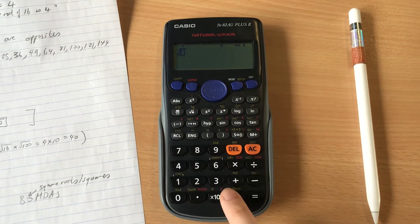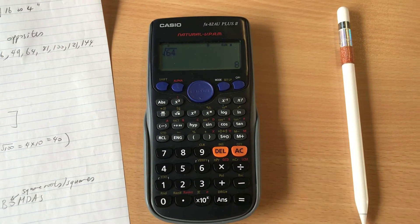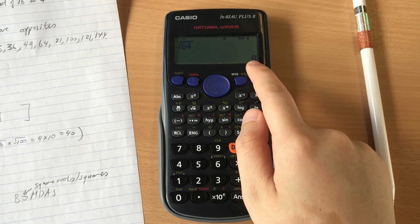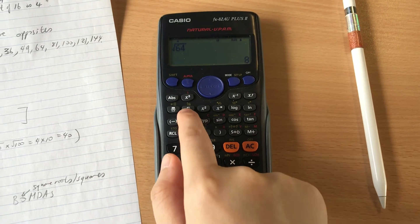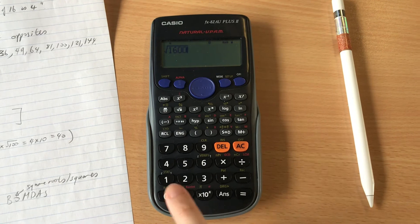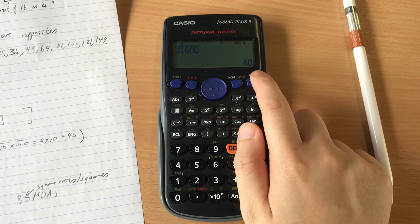So square root of 64, that was example B, is equal to 8 as we wanted in our answer. And then in example C you wanted a square root of 1,600 and you press equals, there you go, 40 as we agreed on.